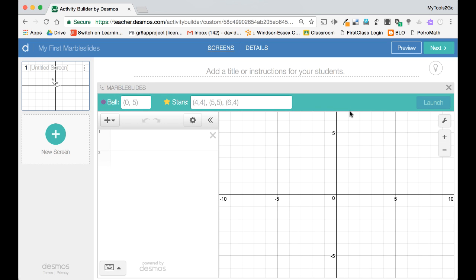What you will see is the typical Desmos graph now with two new additions. A place to enter the coordinates of where the marbles will fall from and where the stars you have to collect will go.